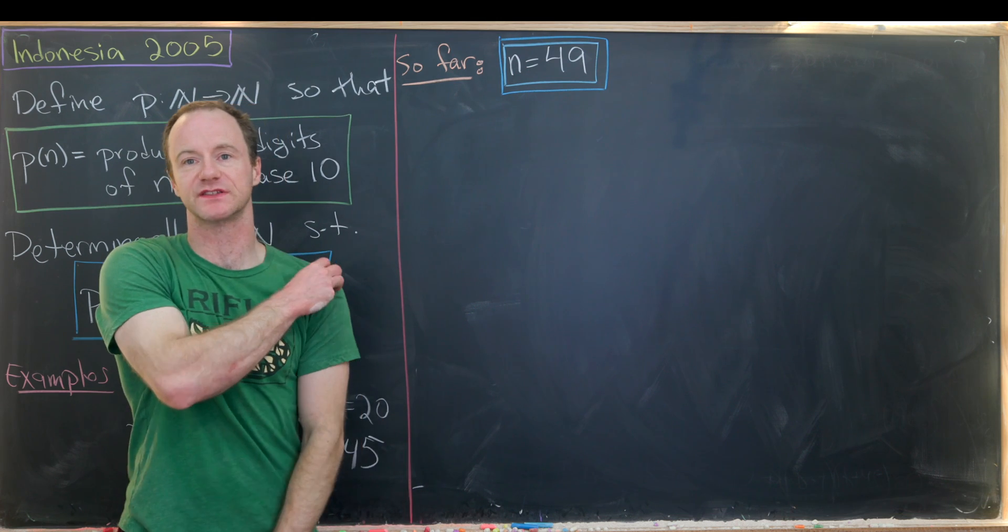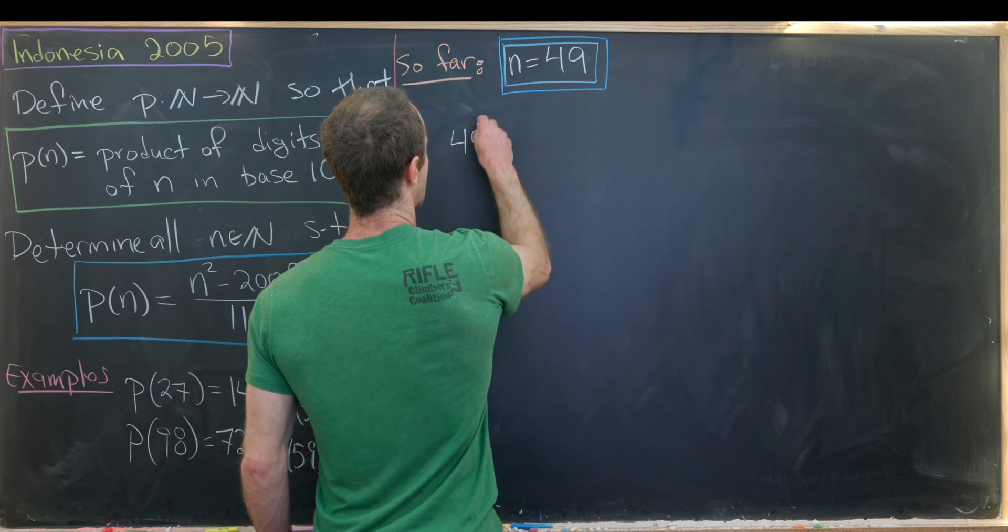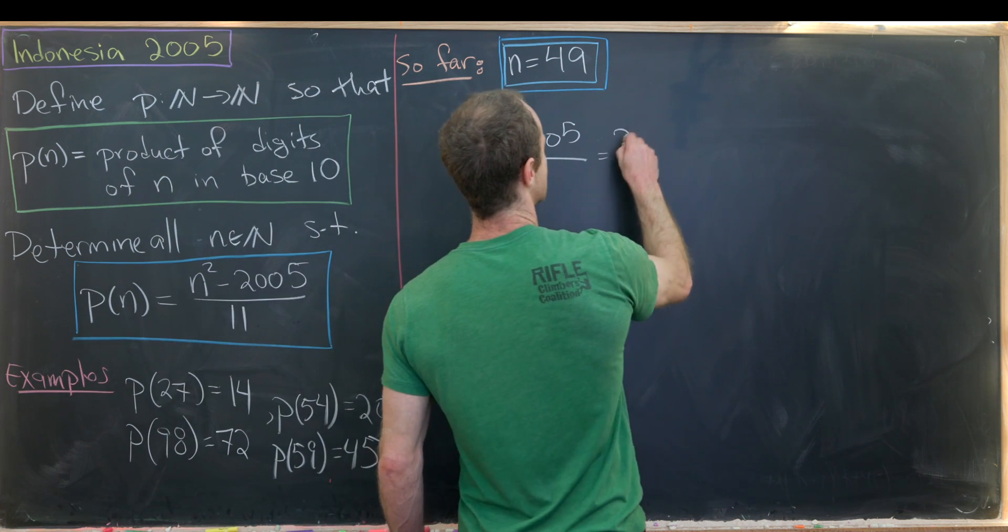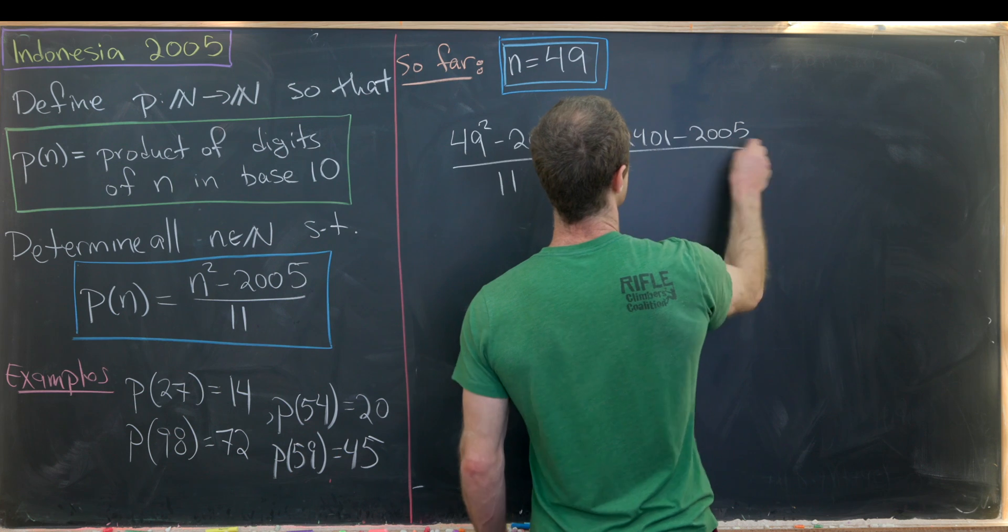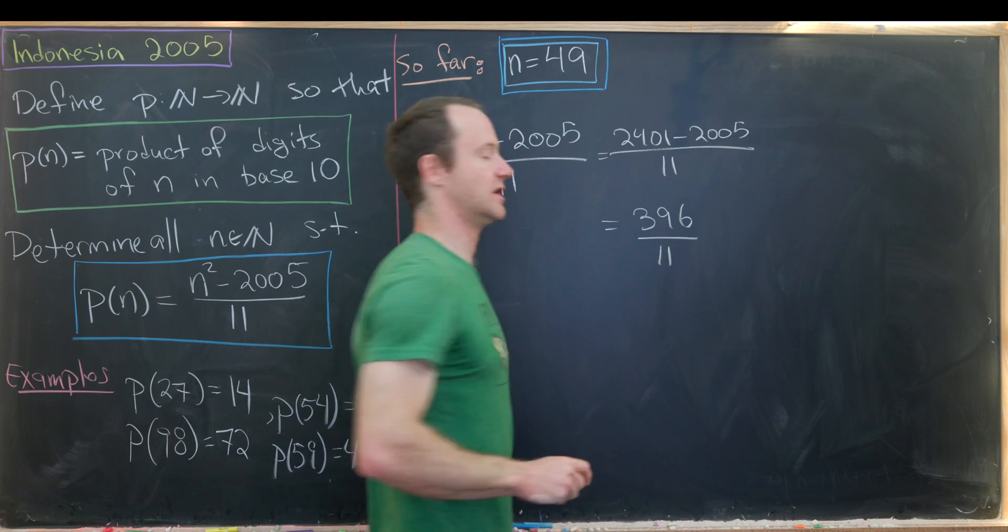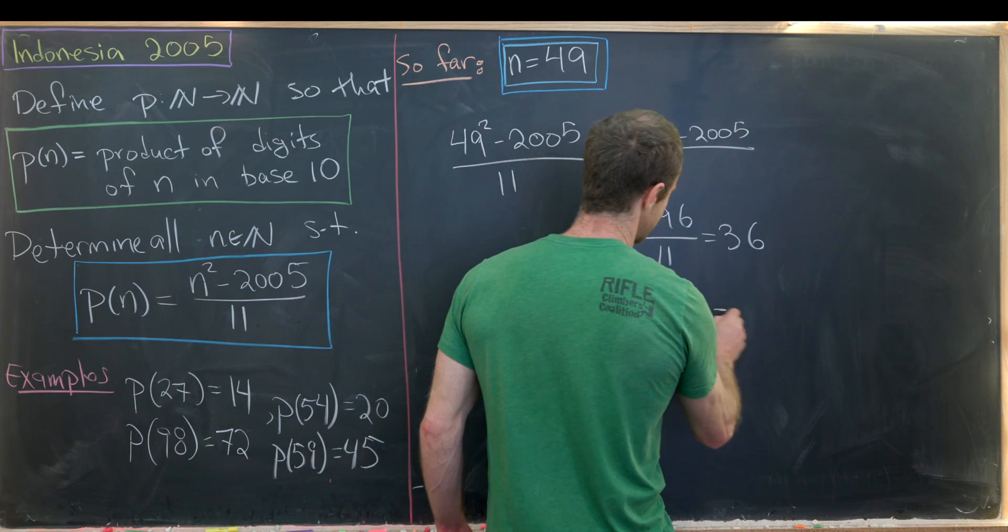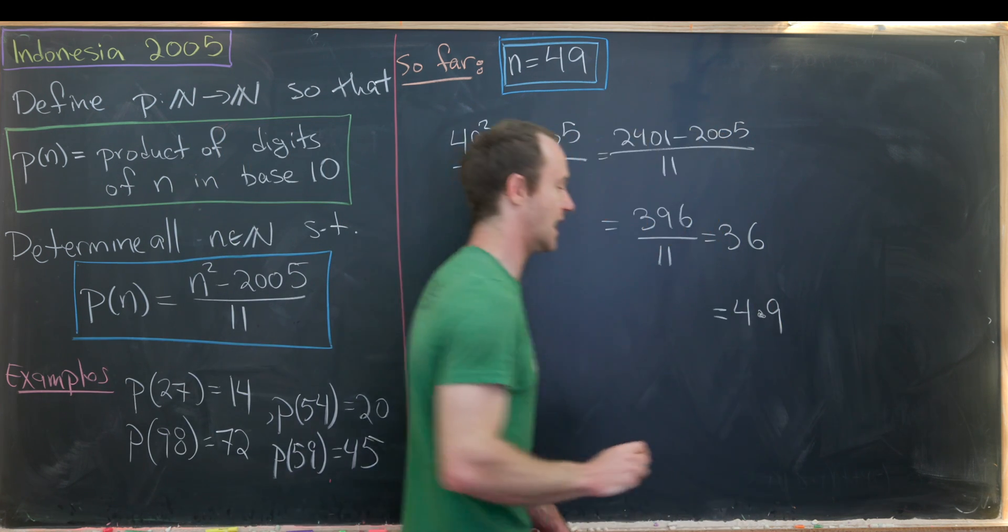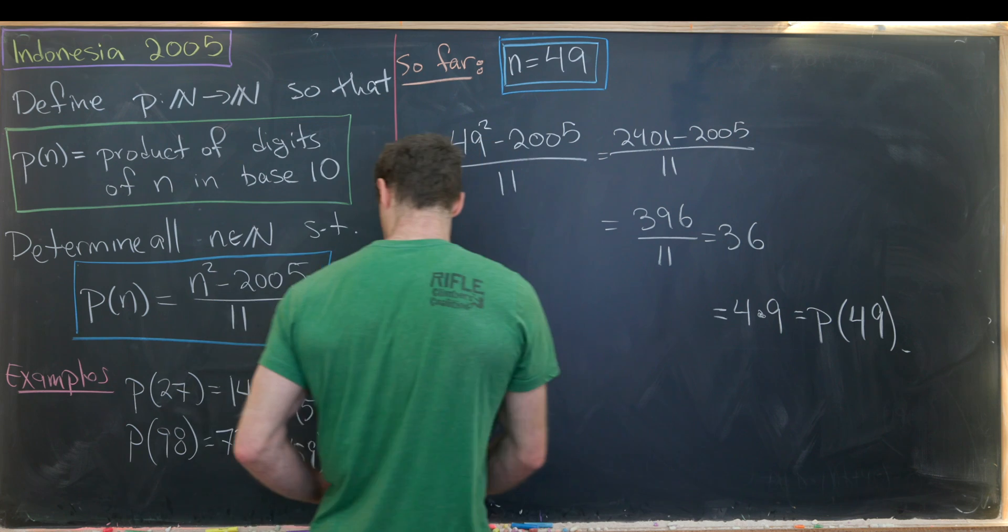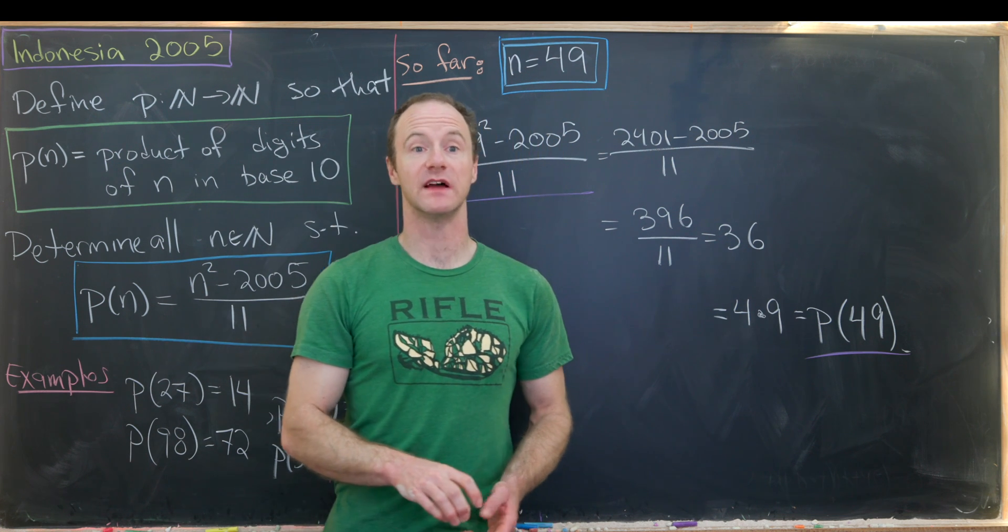So let's finish this thing off just by checking that 49 satisfies this equation. So we just determined that 49 seems like it'll be a solution to our problem over here. Let's maybe go ahead and check that to make sure. So that means we need to do 49 squared minus 2005 over 11. So 49 squared ends up being 2401 minus 2005. We have that's all over 11. So let's see. This ends up being 396 over 11. So 396 divided by 11 is in fact equal to 36. But what is 36? 36 is nothing other than 4 times 9. But notice 4 times 9 is exactly p evaluated at 49. So linking this all together, we see that we have indeed satisfied this equation over here. And that's a good place to stop.